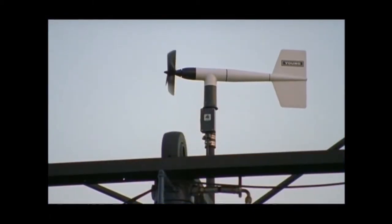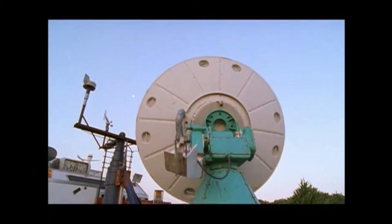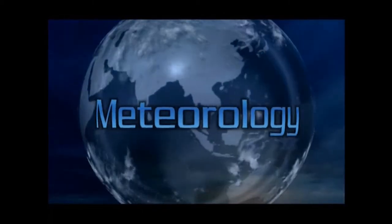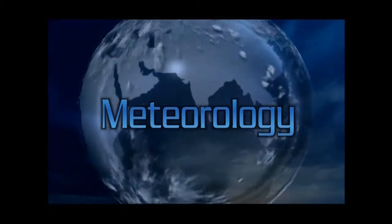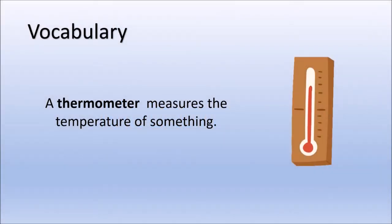There's a science to predicting weather and it's called meteorology. One tool that meteorologists often use are thermometers. A thermometer measures the temperature of something. When a meteorologist uses a thermometer, they're measuring how hot or cold it is outside.